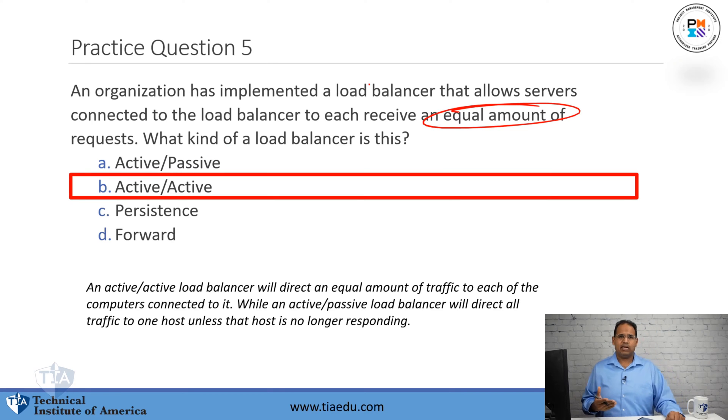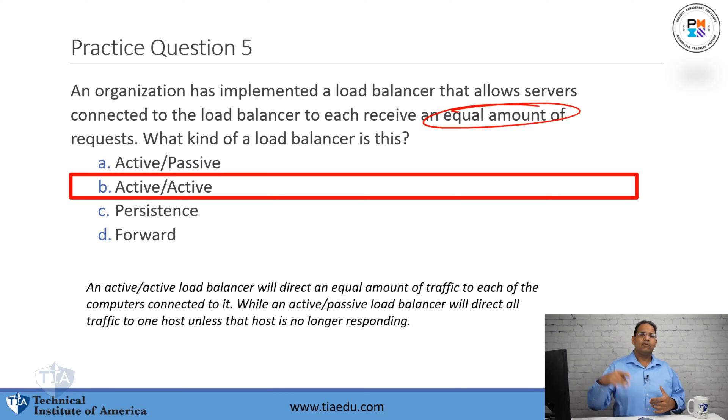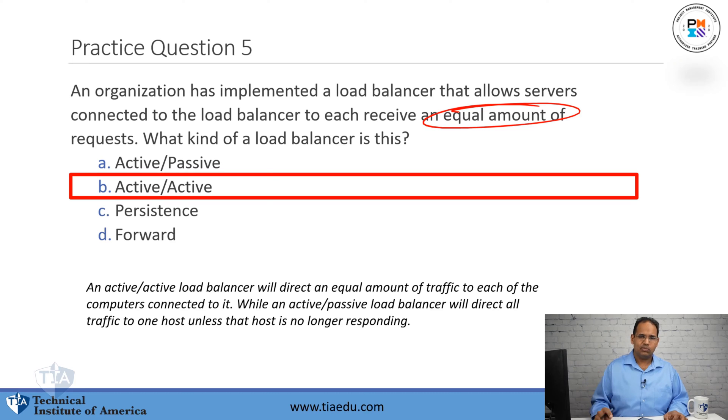The other type is called active-passive, where traffic is sent to one machine, and if that one goes down, the other one kicks in.